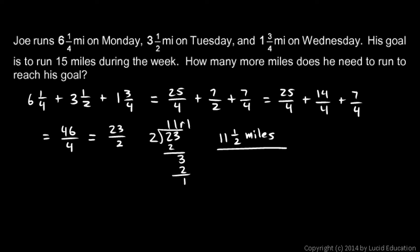So if we take the 15 and we subtract the 11 and a half, we'll have our answer. That's how many more miles he needs to run to reach his goal. Well, 15 is the same as 30 over 2.